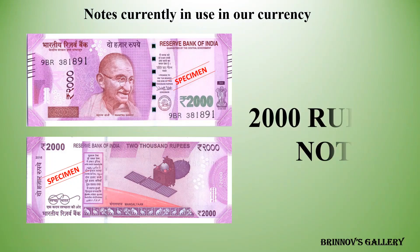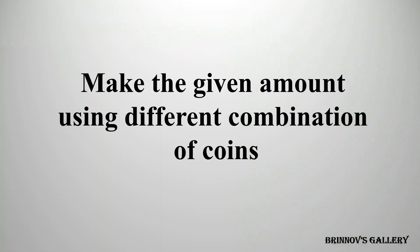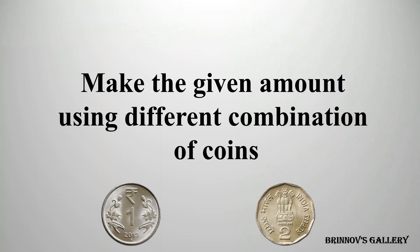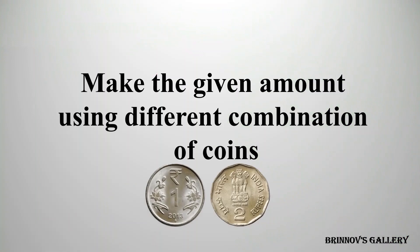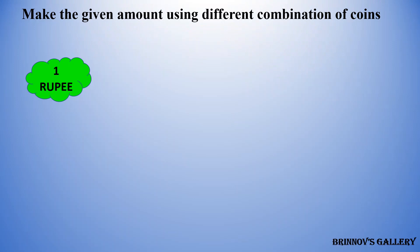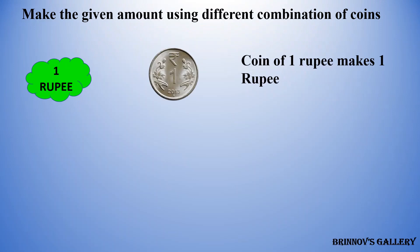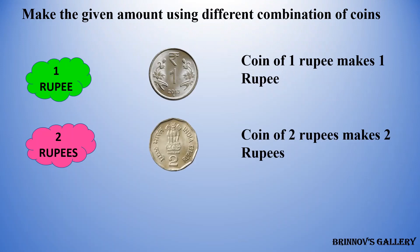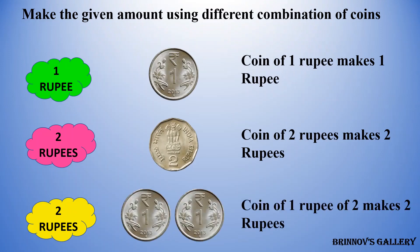2 Rupees note. 1 Rupees note. Coin of 1 Rupee makes 1 Rupee. 2 Rupees: coin of 2 Rupees makes 2 Rupees.